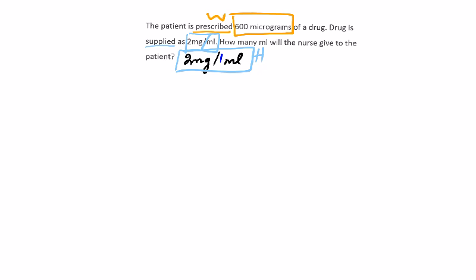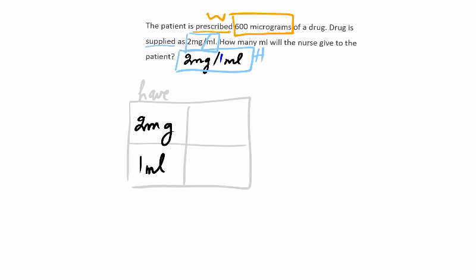Right, so if we decide to use the box method, same thing as usual, start with a half, be consistent. So we have to enter the two quantities of our half here, the 2 milligrams in 1 mil. And we have to enter the one single quantity of our want, which is 600 micrograms.